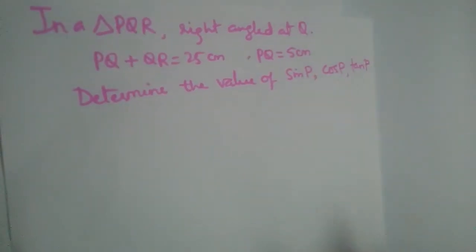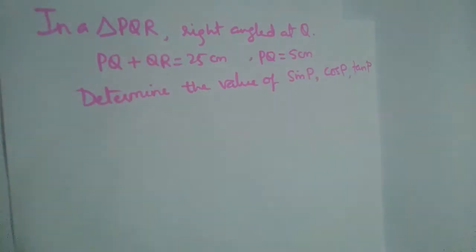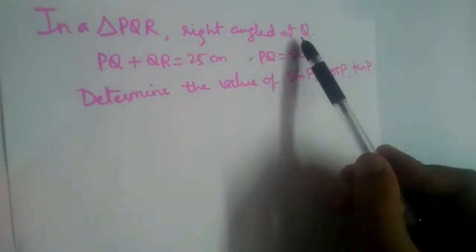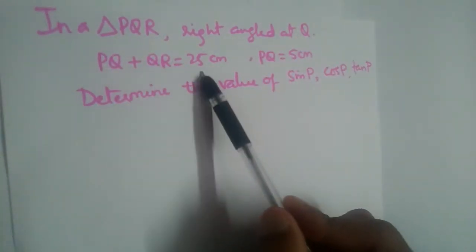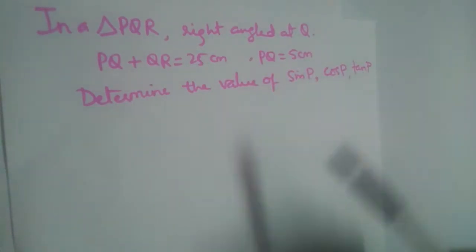So we have a problem in this video. In a triangle PQR, right angle is at Q. PQ plus QR is 25 cm, PQ is 5 cm. Determine the value of sin P, cos P and tan P.